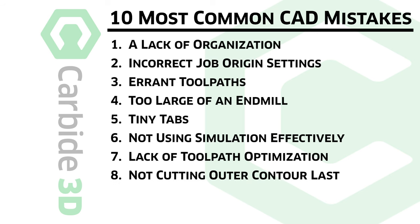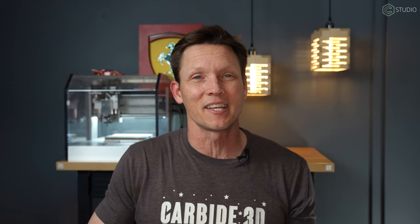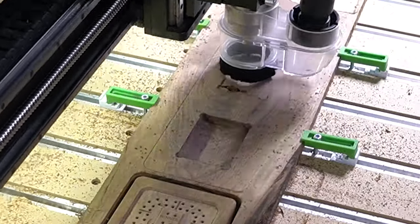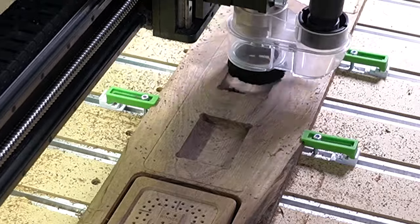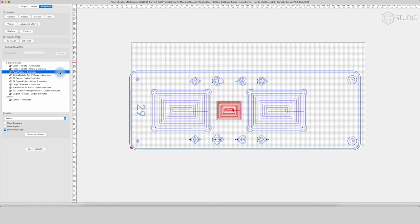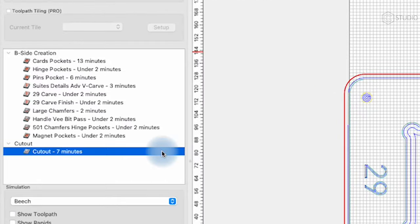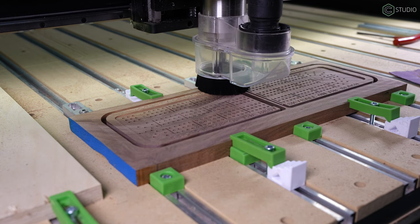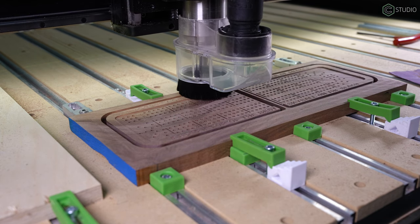Number eight on our top 10 CAD mistakes is cutting outer features before cutting inner features and details. You want the part at maximum strength while you're detailing it, while you're pocketing it, while you're performing all of the operations that you want on that thing. Your outer cutout should be the last thing whenever possible. When it isn't, look up at number seven — sort your tool paths. Make sure you don't have too tiny of tabs if you plan to do a little bit of machining after your contour cutout, but try and avoid it if you can.